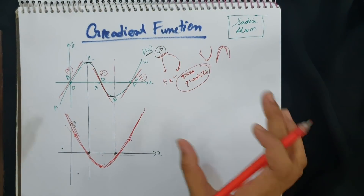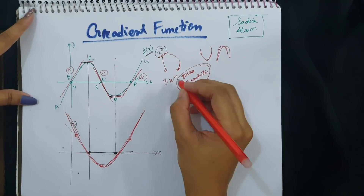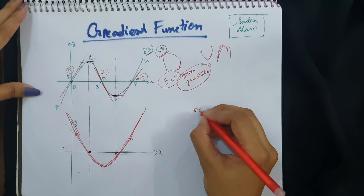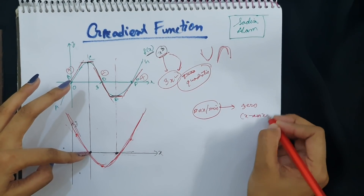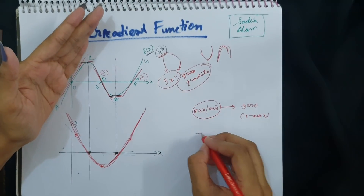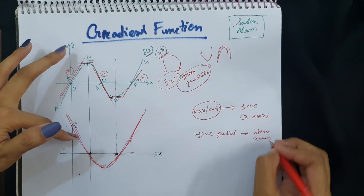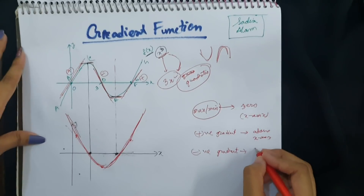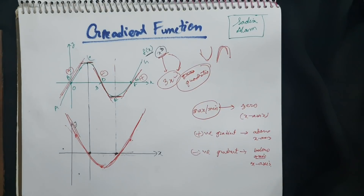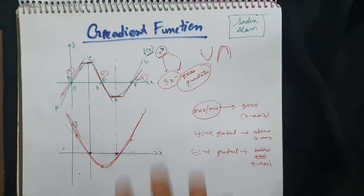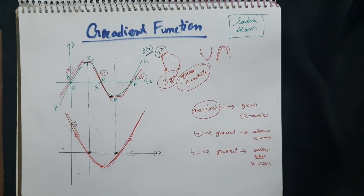Basically, even if we do not know the equation but have the sketch of the graph, select the key coordinates and join them depending on the shape of the curve. Remember: at maximum or minimum points the gradient is zero, so the gradient graph cuts the x-axis there. If the original graph moves upward it has a positive gradient so the point is above the x-axis; if it moves downward the gradient is negative and the point is below. We need to know the power of x to determine the correct shape of the gradient function.